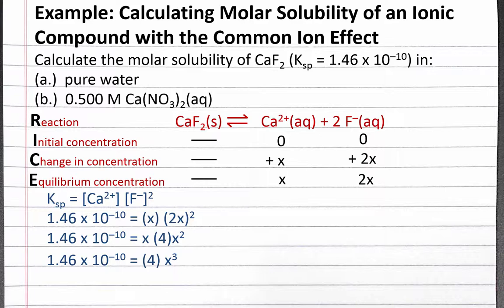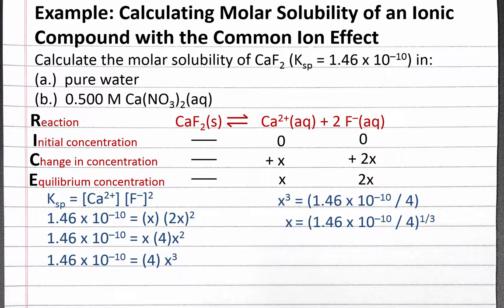Then we can divide both sides by 4. Since x is raised to the third power, we take both sides to the 1/3 power. Completing the calculation, we should get a molar solubility of 3.32 times 10 to the negative fourth moles of calcium fluoride per liter of solution. This is the molar solubility of calcium fluoride in pure water for part A.